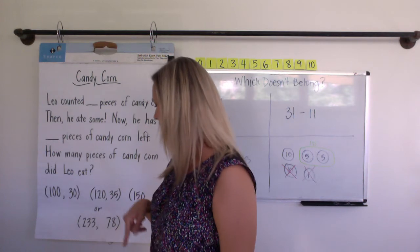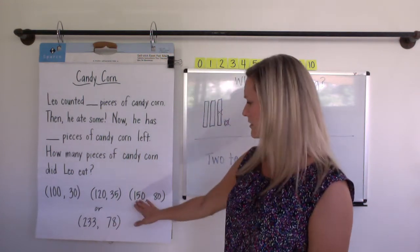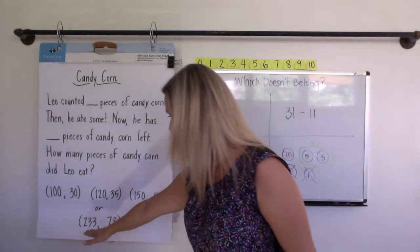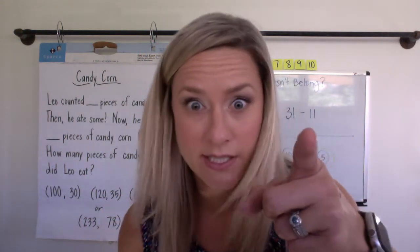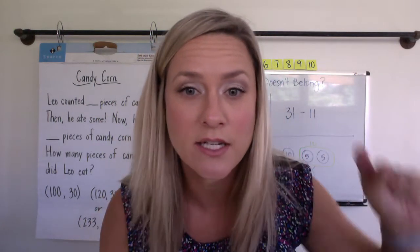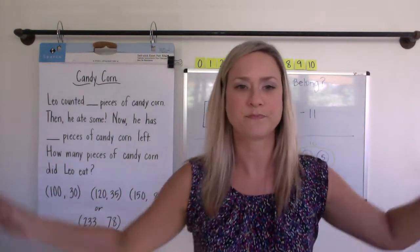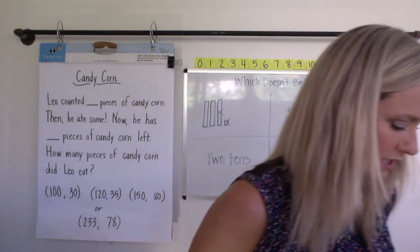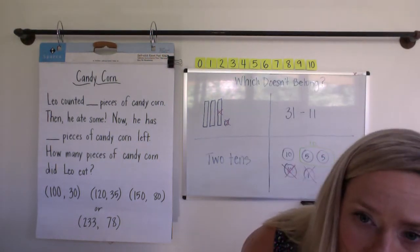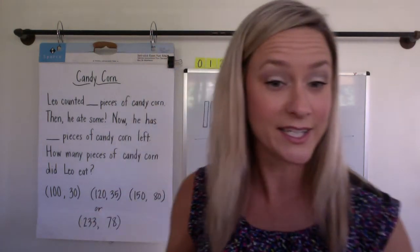Alright, we have 130, 120, and 35, 150 and 80, or 233 and 78. But you're not choosing the hardest number set until you have a good solid strategy for these number sets. Okay, let's do this. I'm going to get my post-it notes and you are going to wait. Just kidding. Well, not really. You are going to wait.